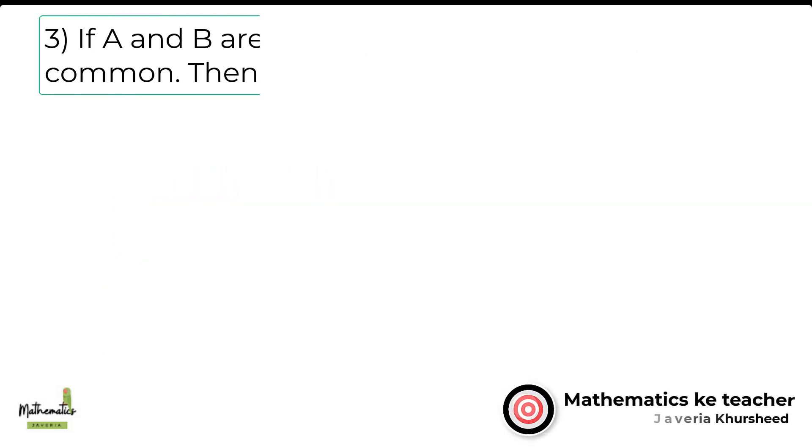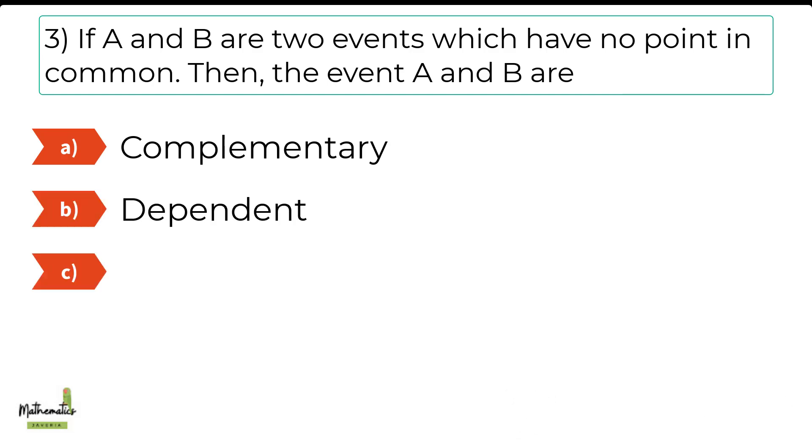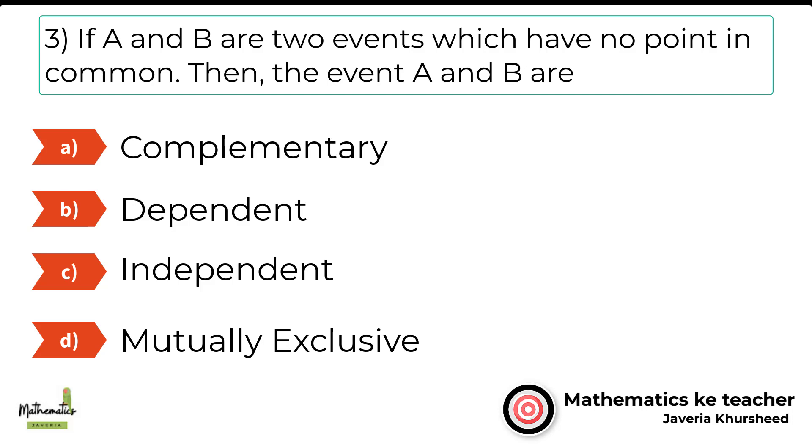Number 3. If A and B are two events which have no point in common, then the event A and B are: A. Complementary. B. Dependent. C. Independent. D. Mutually exclusive.